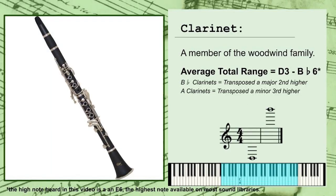Let's talk about the clarinet. The clarinet is a member of the woodwind section in the modern orchestra, and has an average total range of D3 to Bb6, or the D below middle C to the Bb almost an octave above high C.